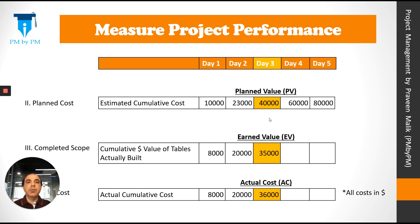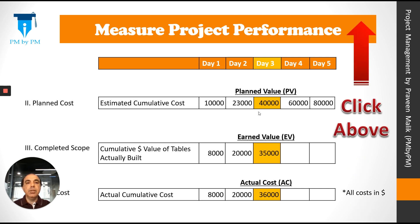So how do we measure project performance using EVM? In my previous video I talked about an example project where PV was $40,000, EV was $35,000, and AC was $36,000. You can click above to view the previous video to understand what PV, EV, and AC are. In this video we'll just assume that PV is $40,000, EV is $35,000, and AC is $36,000. We'll use these values to determine the current project status.